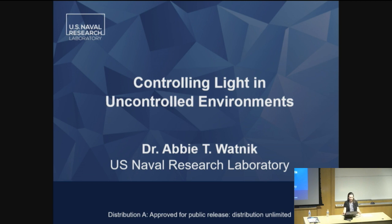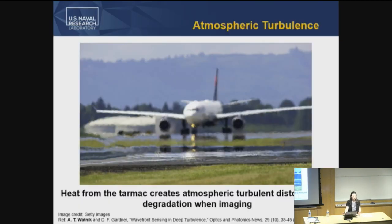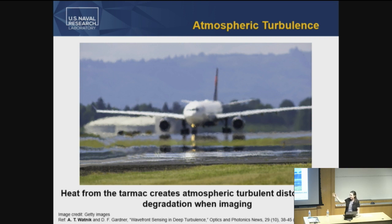What do I mean by uncontrolled environments? We're going to go through a couple of different ones. First, atmospheric turbulence. Here's a picture of an airplane on a tarmac, and the heat creates this atmospheric distortion. What we would like to have is a nice, crisp, clear image, but the atmosphere creates a very distorted image, and so we want to be able to correct for that.